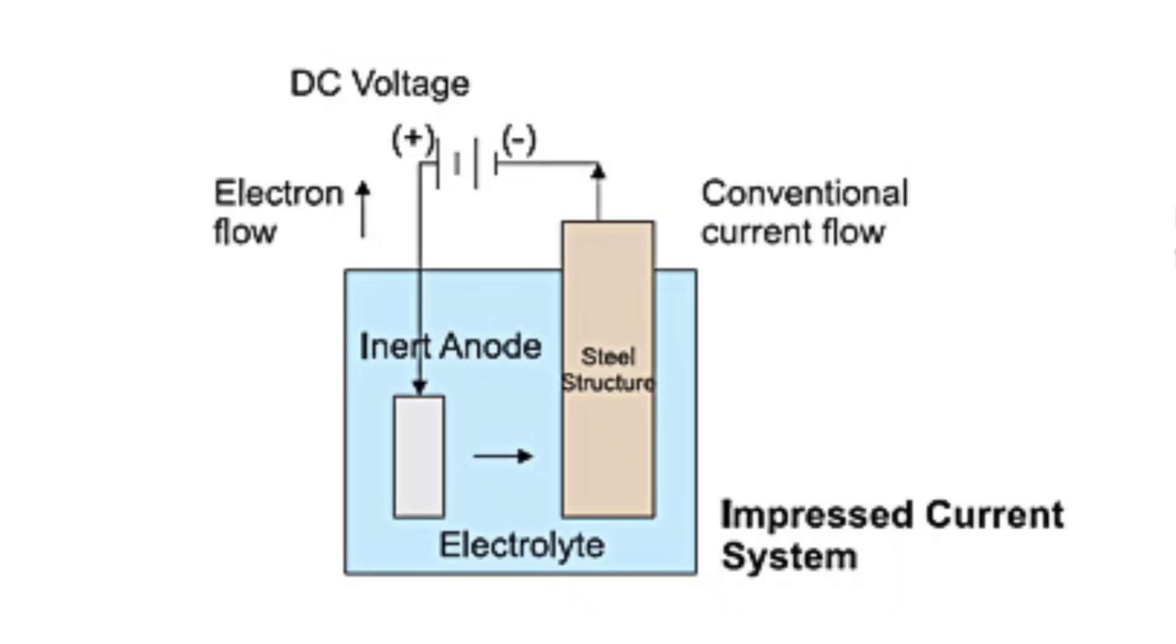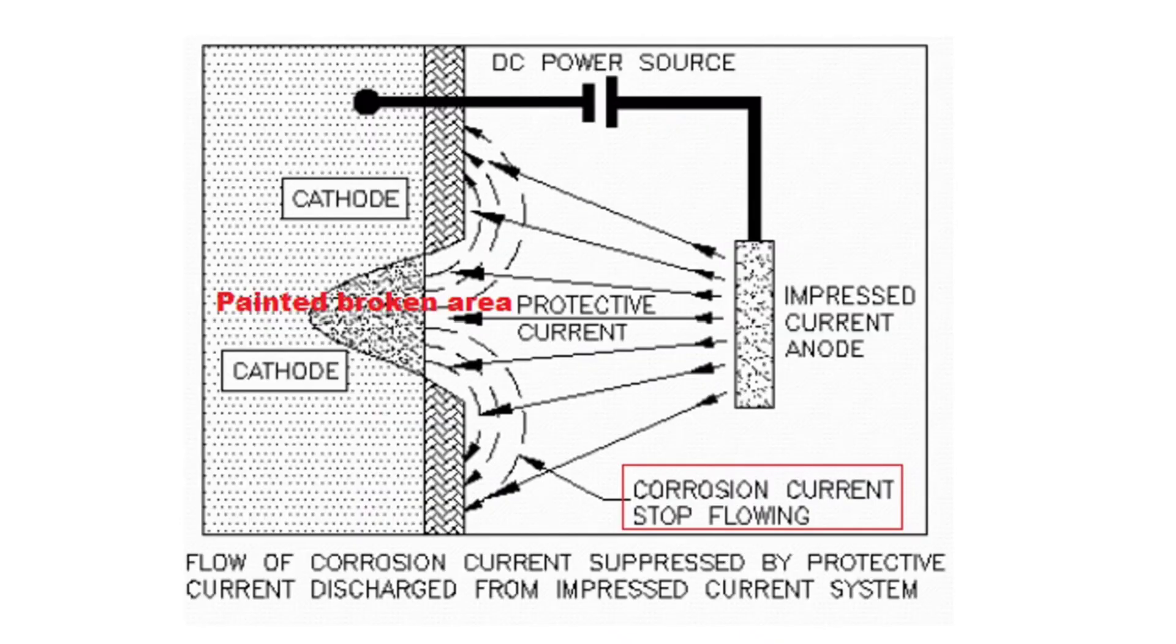This is what the ICCP does. It makes the hull remain always cathode by keeping the potential difference to a minimum and introducing a current opposite to the natural corrosion current, thereby protecting the anode and avoiding corrosion.